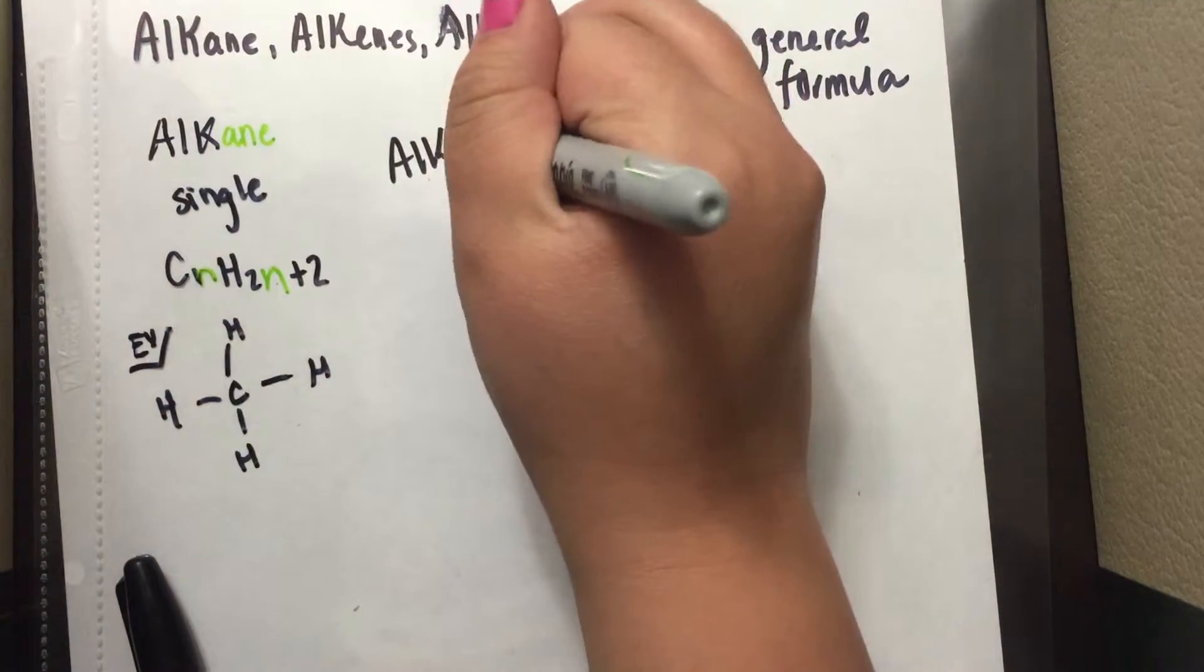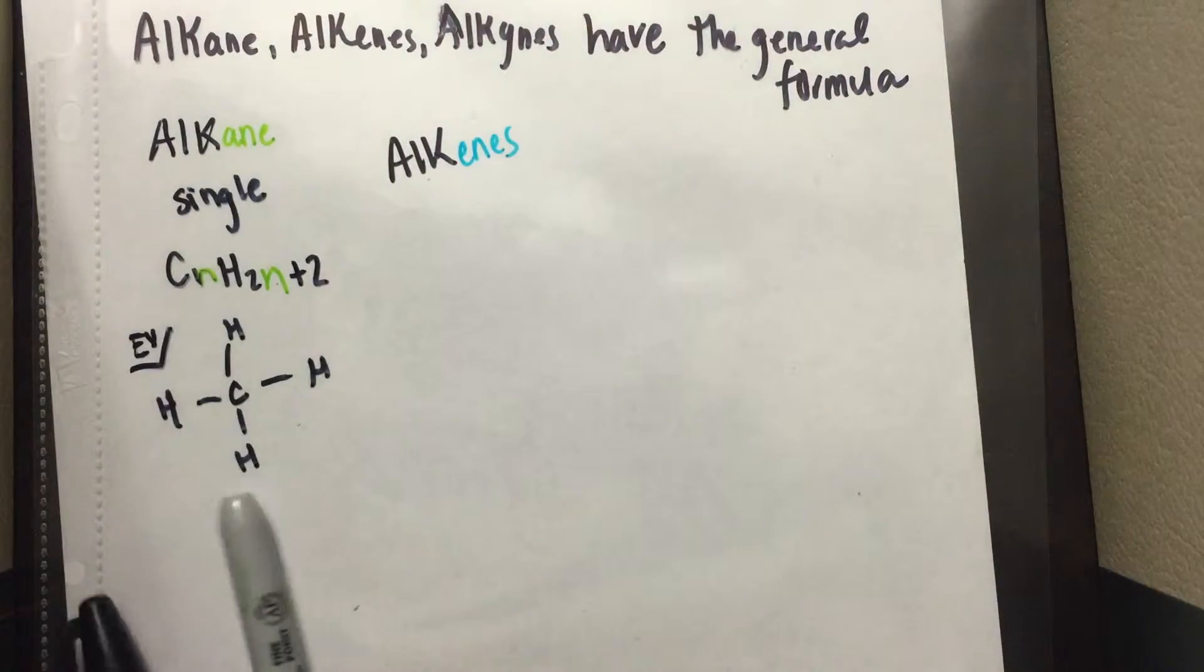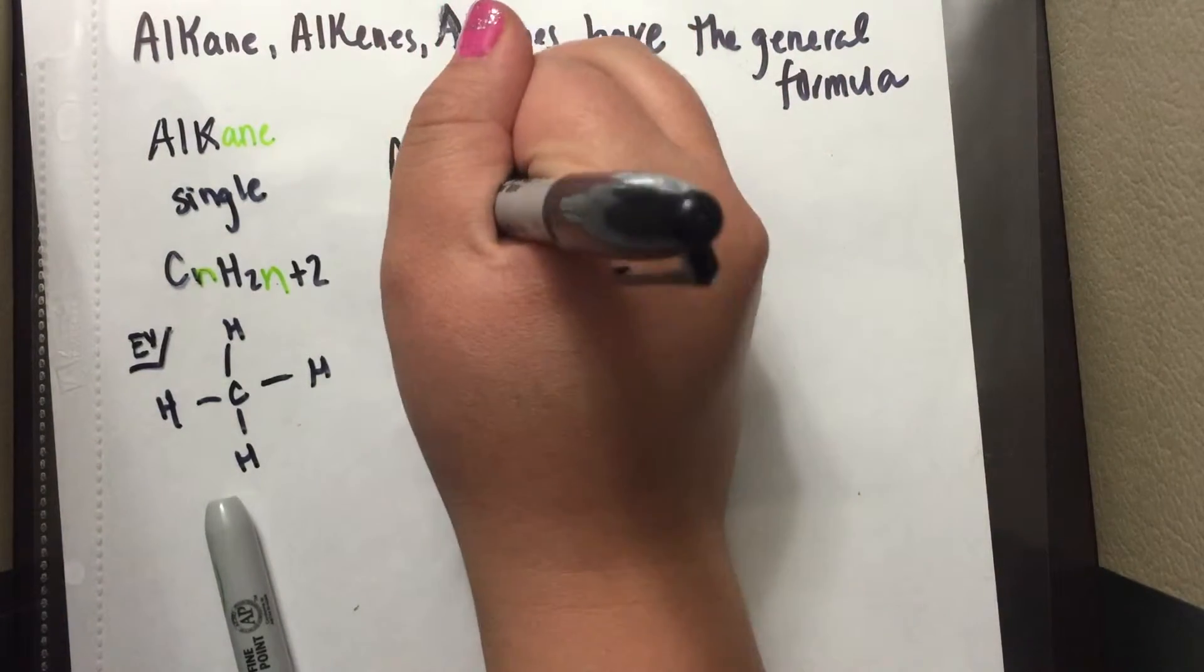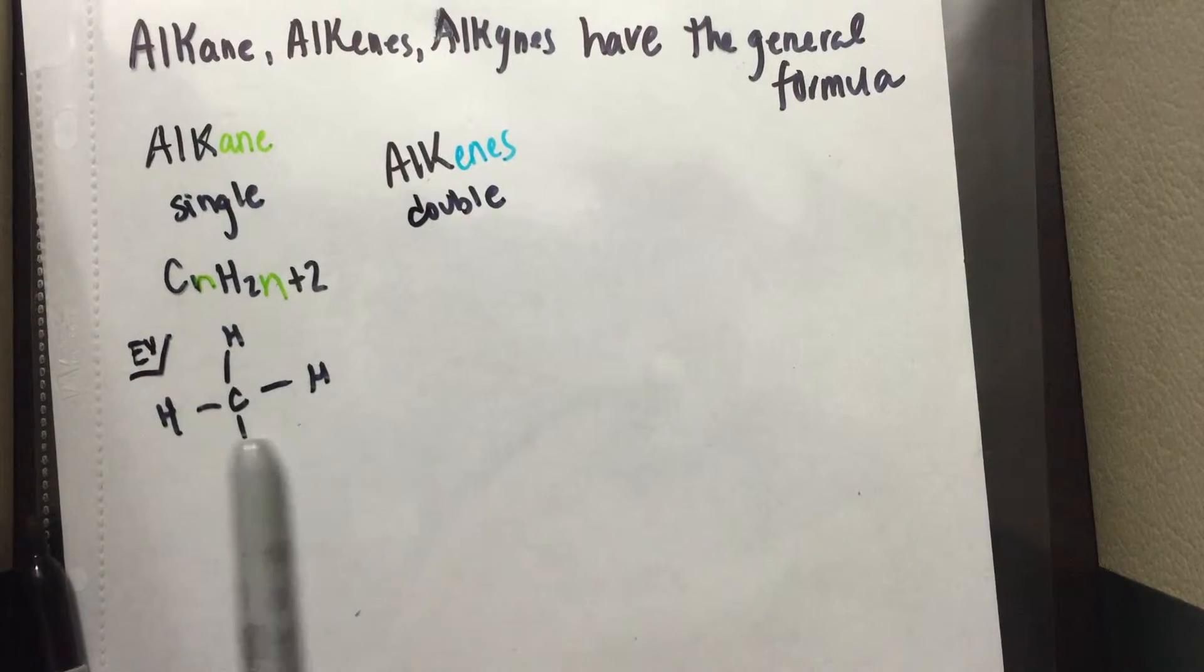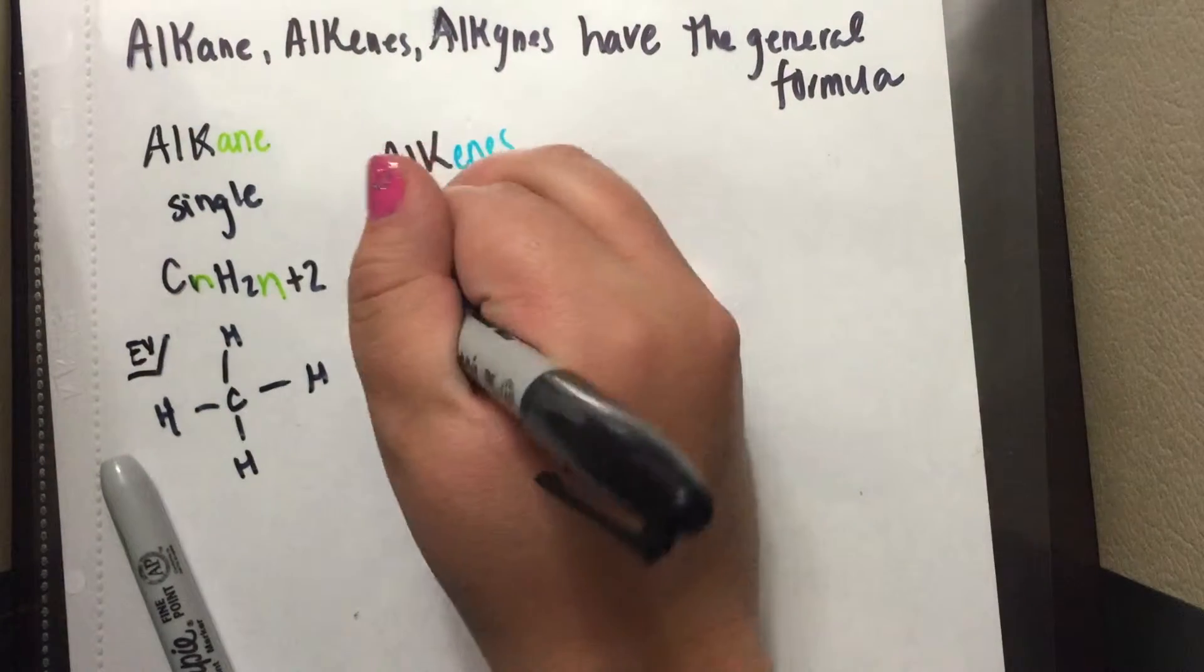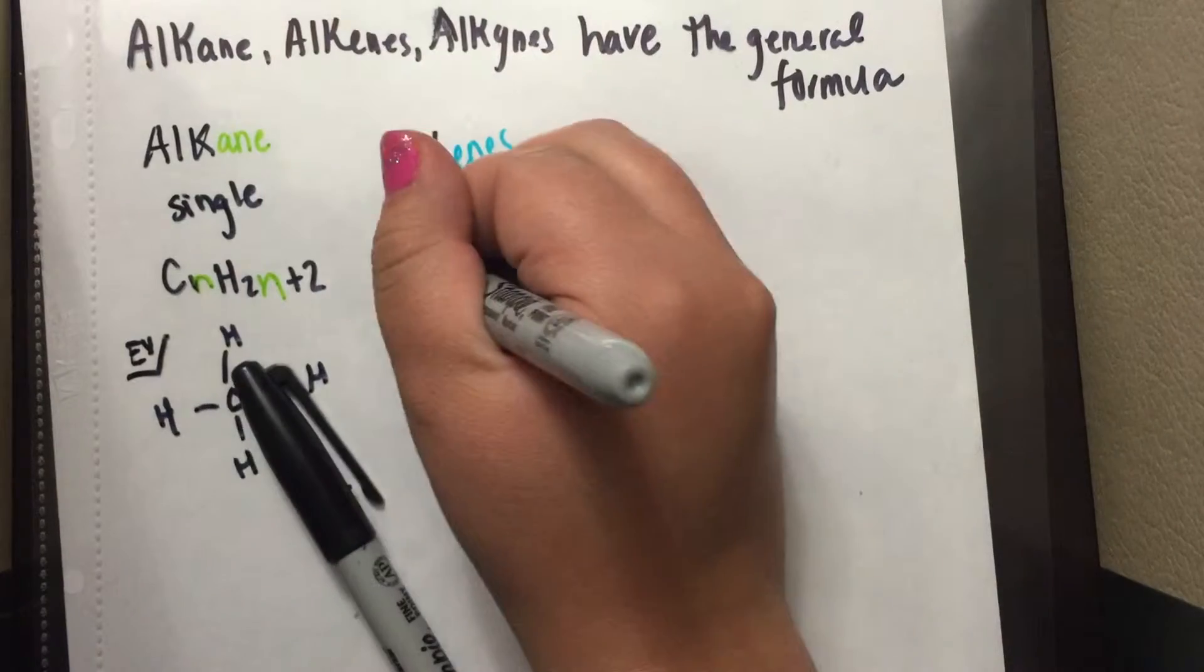Now, the alkenes end in E and E. They have a double bond. And the formula is CnH2n.